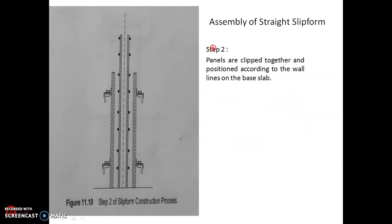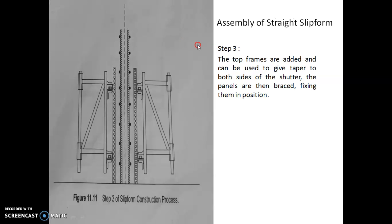In the second step, the form panels are clipped together and positioned according to the wall lines on the base slab. So the form panels are clipped along the wall lines on the base slab — that is the second step in the assembly of the slip form.